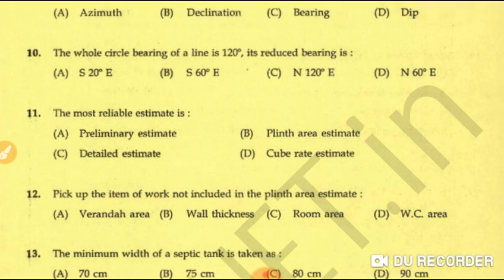Question number eleven: the most reliable estimate is — option A: preliminary estimate, option B: plinth area estimate, option C: detailed estimate, option D: cubic rate estimate. Although plinth area/square meter method and cubic rate/cubic meter methods are used, the most reliable estimate is the detailed estimate. Option C is the correct answer.